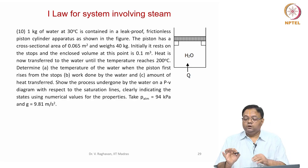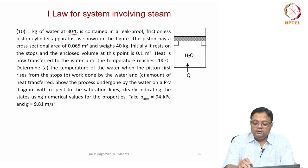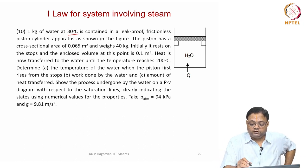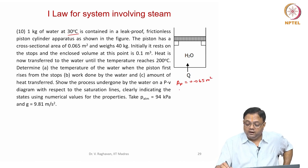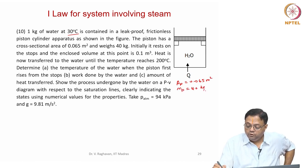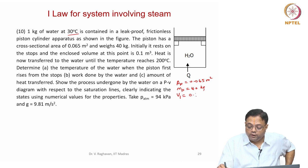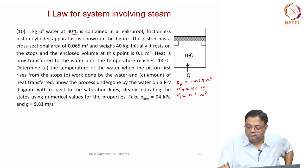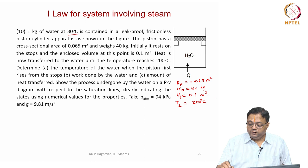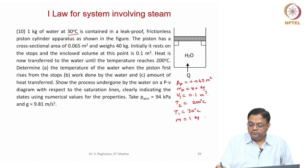1 kg of water at 30 degrees is contained in a leak-proof frictionless piston-cylinder apparatus as shown in the figure. The piston has a cross-sectional area Ap equal to 0.065 square meters and mass of the piston is 40 kg, initially resting on the stops as shown in the figure, and enclosed volume V1 is 0.1 cubic meters. Heat is transferred to the water until the temperature reaches T2 = 200°C. Initial temperature T1 is 30°C, mass is 1 kg.